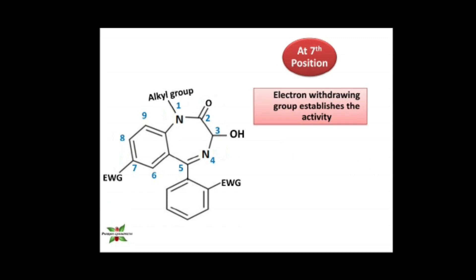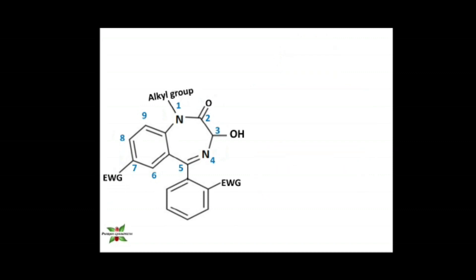At position seven, an electron withdrawing group is essential and critical for establishing optimum activity. This position largely determines the activity of the compound. The greater the electron-withdrawing ability of the group at position seven, the greater the activity.